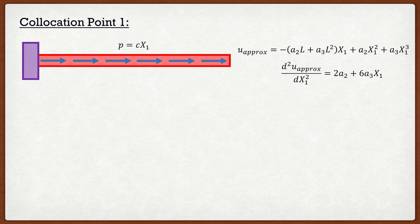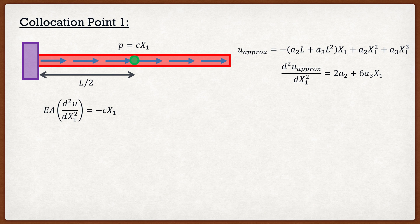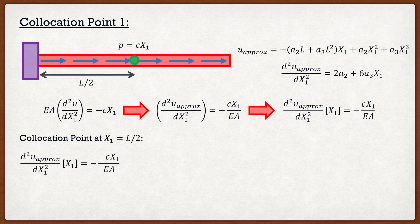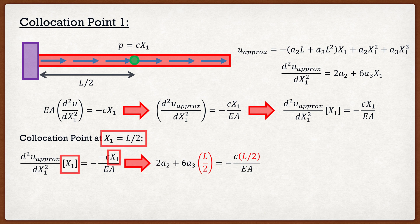From here I get to pick a collocation point. I'm going to pick x1 equal to L over 2, the mid-span of the beam. We know the beam is governed by the following differential equation. Moving EA to the other side, the second derivative of our approximate solution must equal negative c times x1 divided by EA. Substituting x1 equal to L over 2 gives: 2*a2 plus 6*a3 times L over 2 equals negative c times L over 2 divided by EA. We now have no more x's — just a2 and a3.